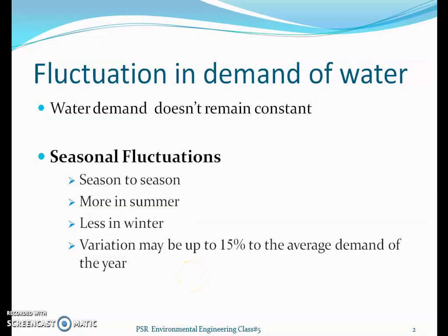The fluctuations in demand occur because water demand does not remain constant throughout the year. It varies season to season, day to day, and even on an hourly basis. In day-to-day life, hourly usage changes — more in the morning and evening, while from 12 to 4, the average consumption is below average because people don't use much water during that time.